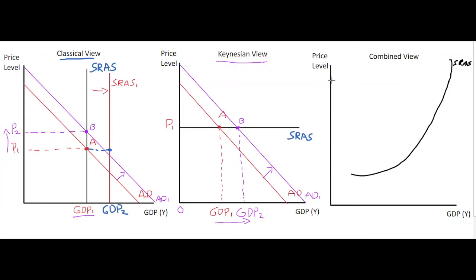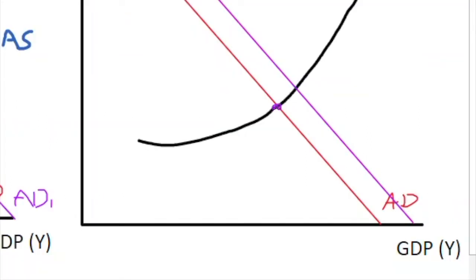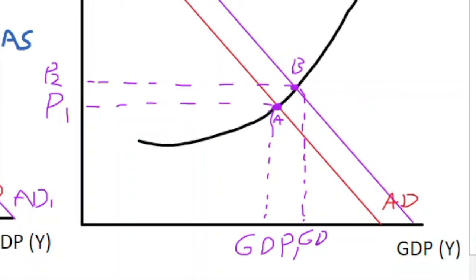Our aggregate demand curve looks exactly the same as before — downward-sloping aggregate demand. If we shift the aggregate demand curve to the right based on maybe expansionary policy, we do get an impact on the real variable in the short run. Starting at the initial level A, we can see that the increase in aggregate demand has caused the price level to increase somewhat, but not as much as the pure classical view with the vertical supply curve, and it has increased GDP somewhat as well.